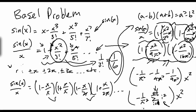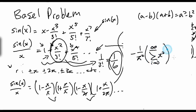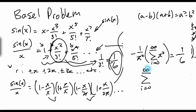Both expressions — the Taylor series and the product form — are equal to sine x over x, so they themselves are equal. That means the coefficient of x² must be equal in both. The coefficient of x² in the Taylor series is negative 1 over 3!, which is negative 1/6. Setting the two coefficients equal: negative 1/π² times the sum equals negative 1/6, and therefore the sum from i=1 to infinity of 1/i² equals π²/6. That's our answer.